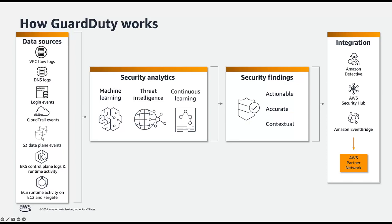You now have visibility into on-host, operating system level activities, and container level context into detected threats. EC2 Runtime Monitoring complements runtime coverage already available for Amazon Elastic Kubernetes Service and Amazon Elastic Container Service on AWS Fargate, giving you comprehensive runtime visibility and detection across popular AWS compute services.